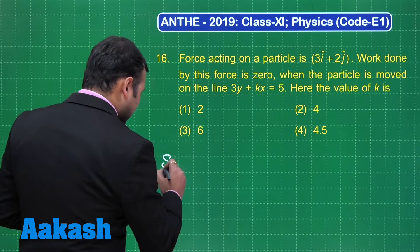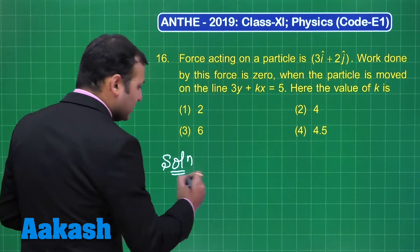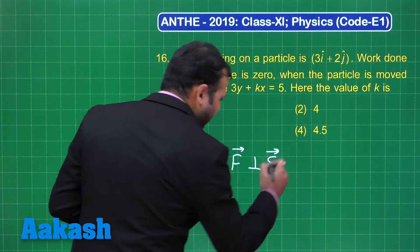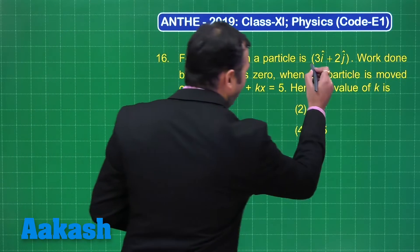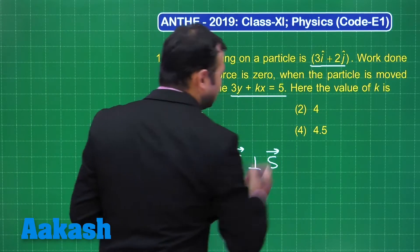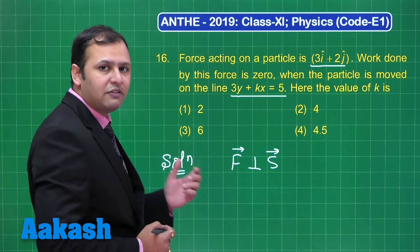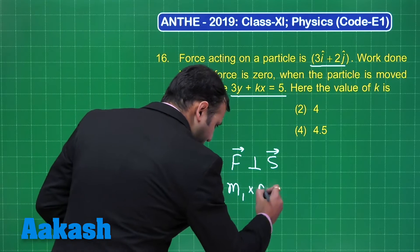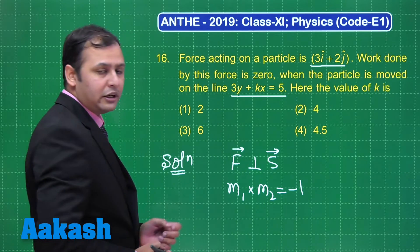It's very evident that work done is zero. That means force is perpendicular to the displacement of the particle. That means the slope of this equation and slope of this equation when multiplied together will give a product of minus 1. So m1 × m2 should equal -1 by the property.